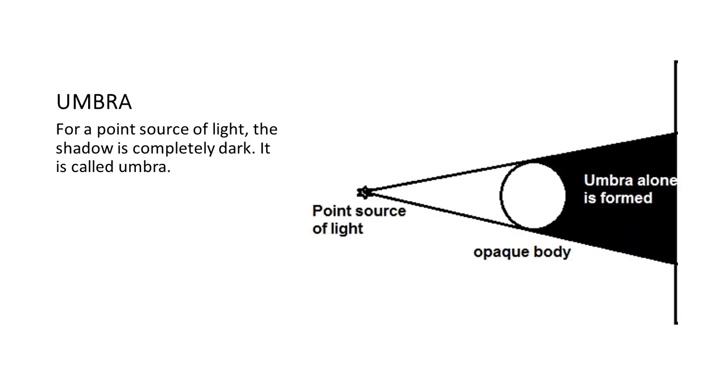Do you know, children, depending upon the size of source of light, we can make changes in the shadow? If you take a point source of light, the shadow formed is completely dark and such shadow is called umbra. As you can see in the figure, the dark portion of shadow is known as umbra.